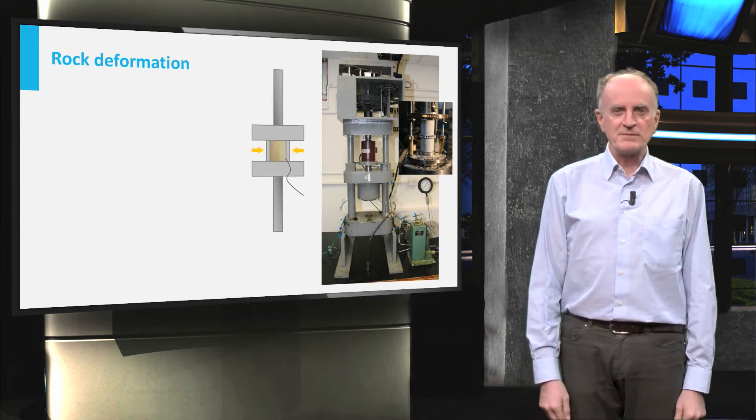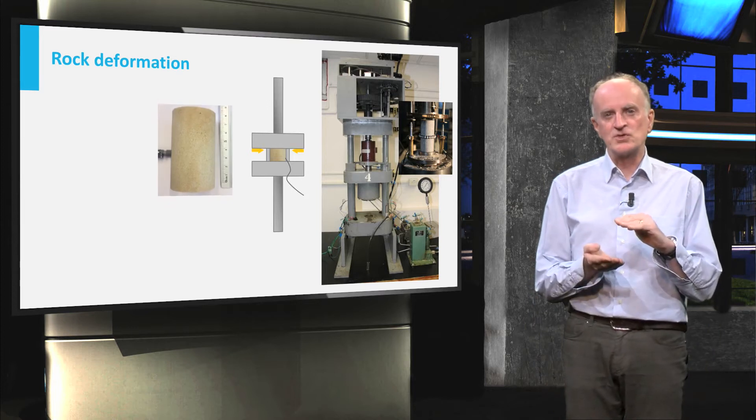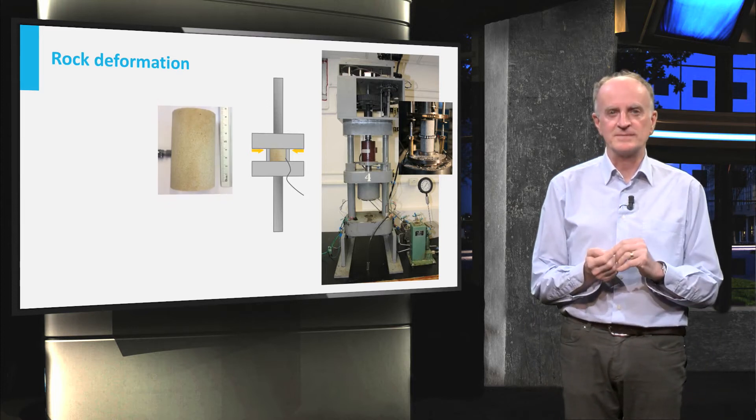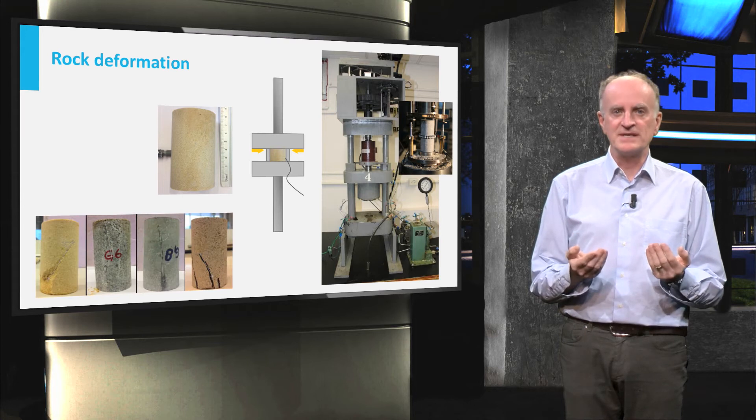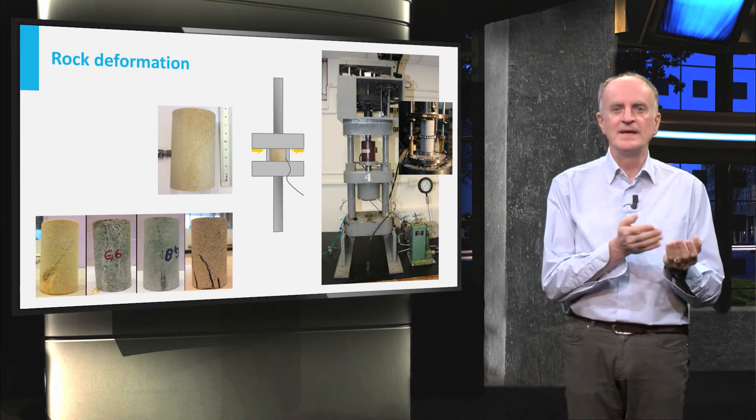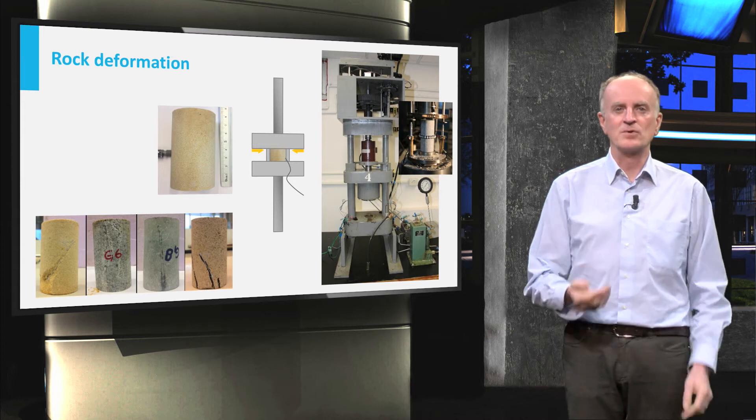When the experiment starts, the piston squeezes the sample, shortening it in the vertical direction. Once the experiment has finished, you open the machine, extract the sample and analyze what the sample looks like.